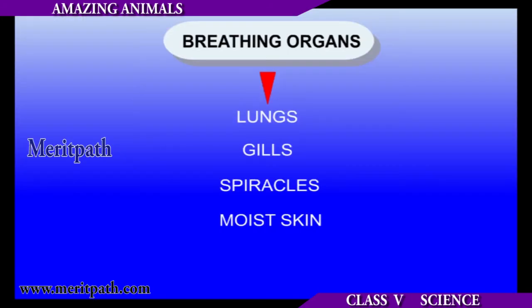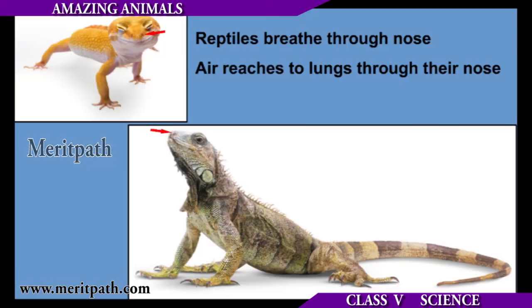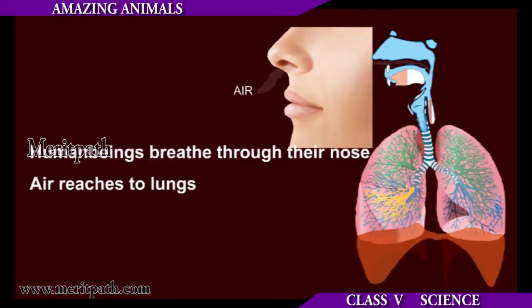Breathing is very essential for survival. Different animals living in different habitats have organs for breathing suited to their environment. Birds, mammals, and reptiles breathe with the help of their lungs. All mammals, including human beings, breathe through their nose, from which air is carried to the lungs.